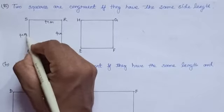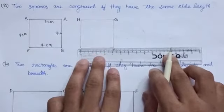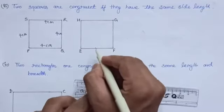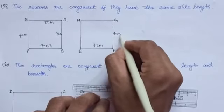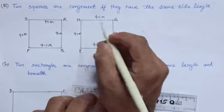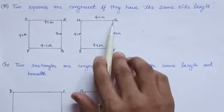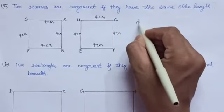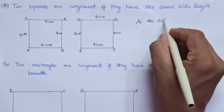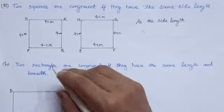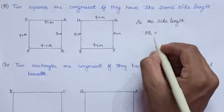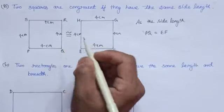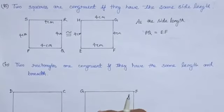In the same way, when we measure the length of the side of square EFJH, each side also measures 4 cm. Now we can see that these two squares PQRS and EFJH have the same side length, that is 4 cm. We can see that the side length PQ is equal to EF. Hence, we can see that these two squares are congruent to each other. Two squares are said to be congruent if they have the same side length.